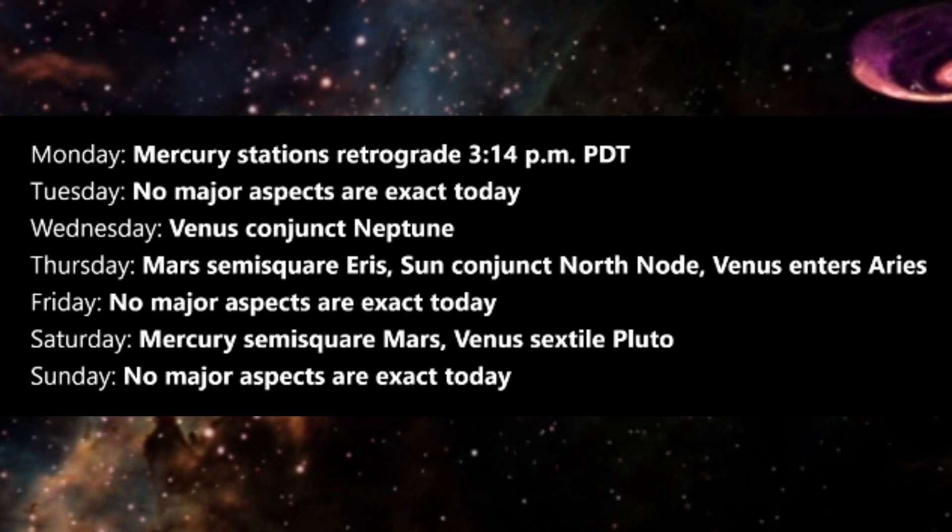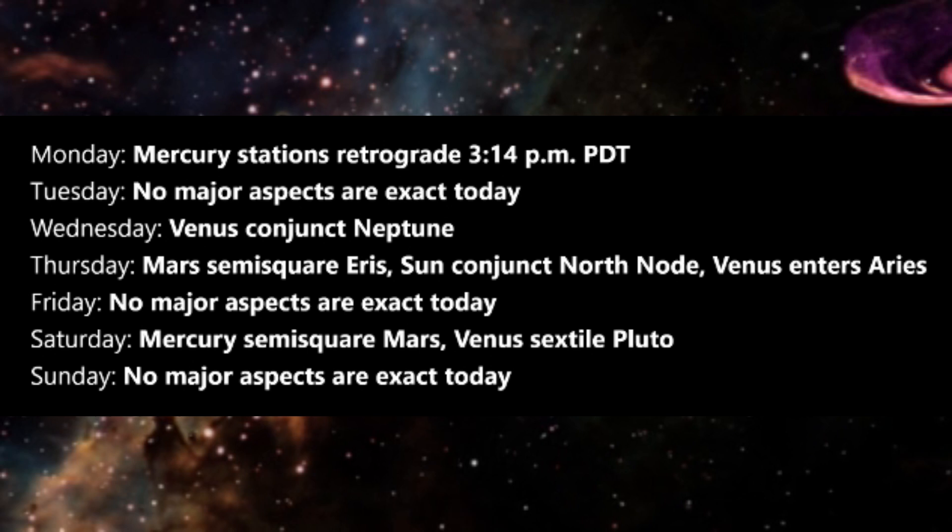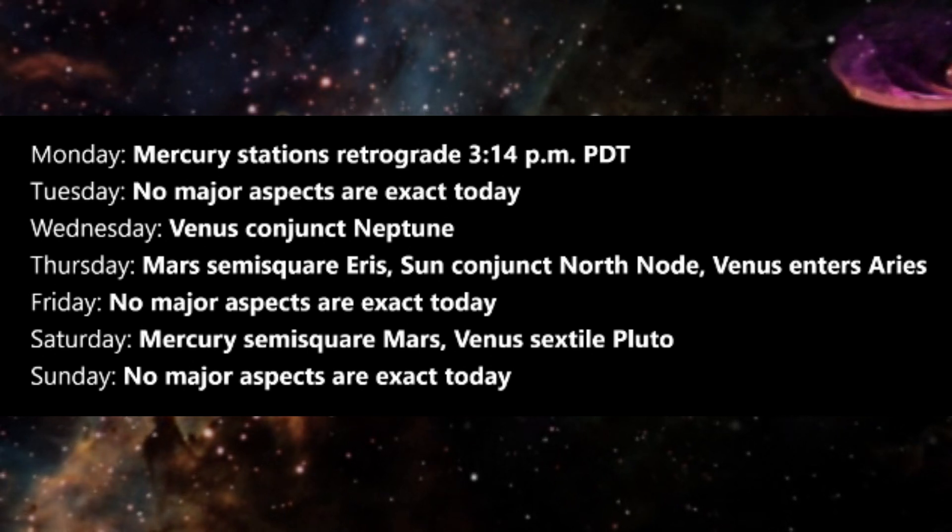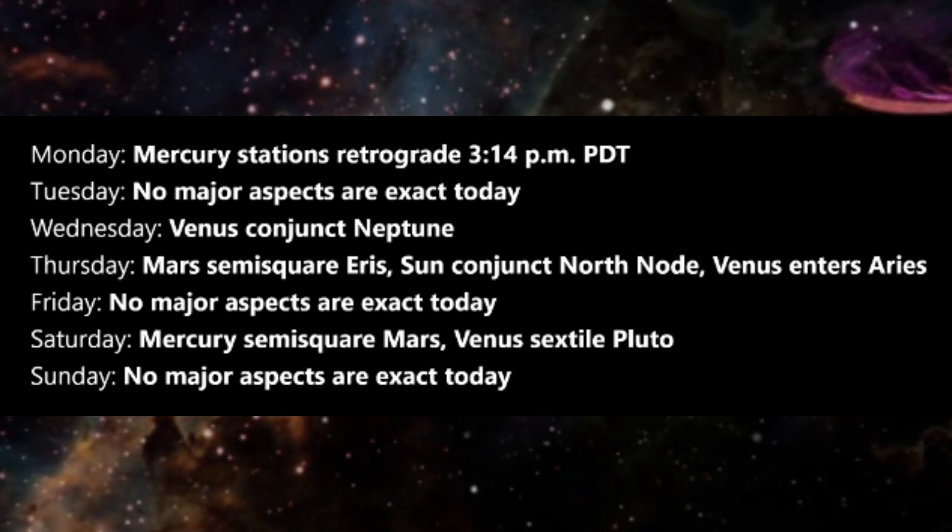There are no major aspects exact on Tuesday. On Wednesday, Venus is conjunct Neptune. This is the annual alignment between Venus, representing the human heart and personal love, and Neptune, which symbolizes the high heart and divine love.